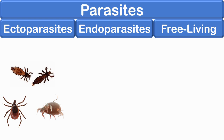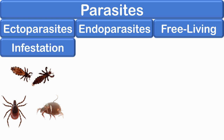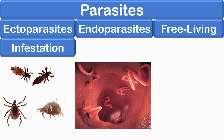The term infestation is often employed for parasitization with ectoparasites. Endoparasites are parasites which live inside the body of the host. Most of the protozoan and helminthic parasites causing human diseases are endoparasites. Examples are hookworm, pinworms, tapeworms, giardia, etc.